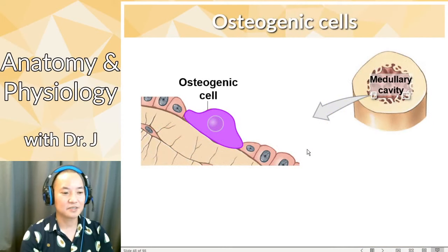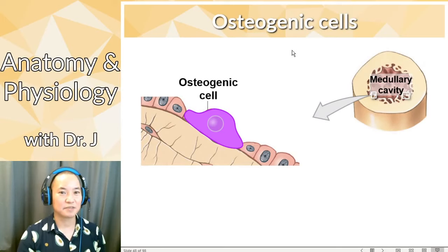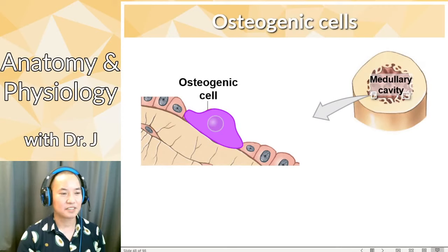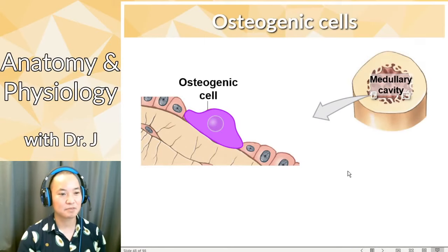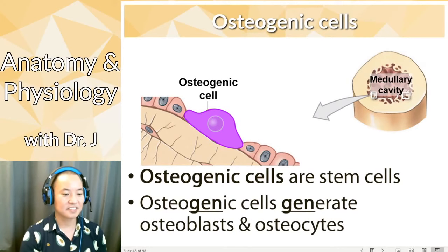Now, osteogenic cells. The root '-gen' refers to making something new, birthing something — like 'generation,' same root word. So osteogenic cells generate; they are the stem cells of your bone tissue. Osteogenic cells generate new osteoblasts and osteocytes.